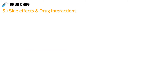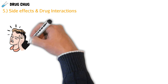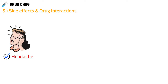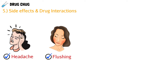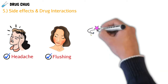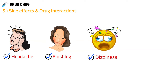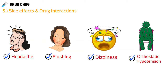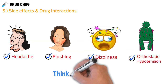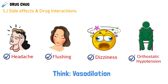Let's talk about some side effects and drug interactions. Patients taking nitrates can experience headache, flushing (redness), dizziness, or orthostatic hypotension — which means low blood pressure when they get up too quickly, causing lightheadedness. All of these side effects are related to the vasodilation that nitrates produce.